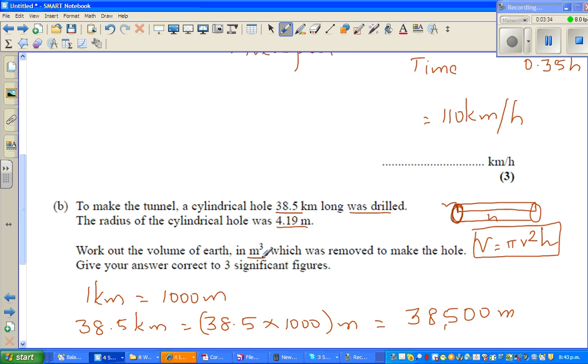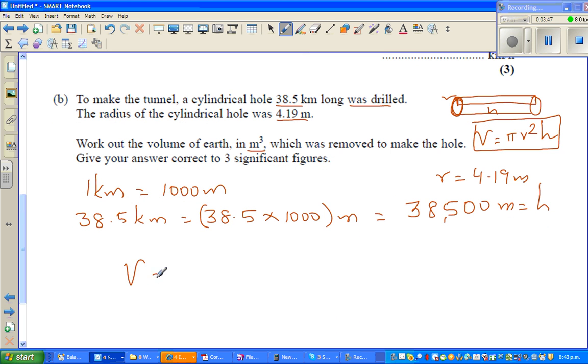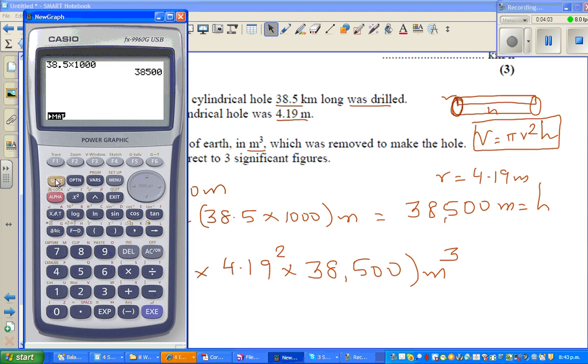The radius is given 4.19 meters. We will need a calculator. Volume is π times 4.19 squared times 38,500, and this would be in meter cube.